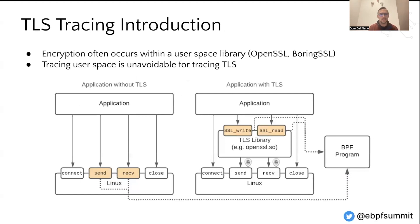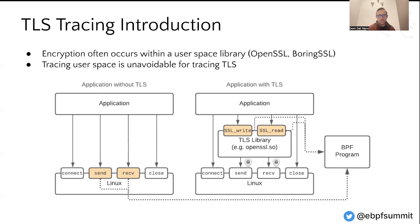Moving on to TLS, we can see here's an example of how we trace a plain text application. On the left hand side, we can attach our BPF program directly to the send and receive syscalls since the application is calling those directly with its payloads. On the right hand side, we see an application that's using TLS, and so that same send and receive syscall layer already has encrypted data. So we need our instrumentation to occur at an earlier point in the data lifecycle — at the SSL write and SSL read function calls within the TLS library. This shows that in order to handle these TLS use cases, we have to trace user space; it's unavoidable.